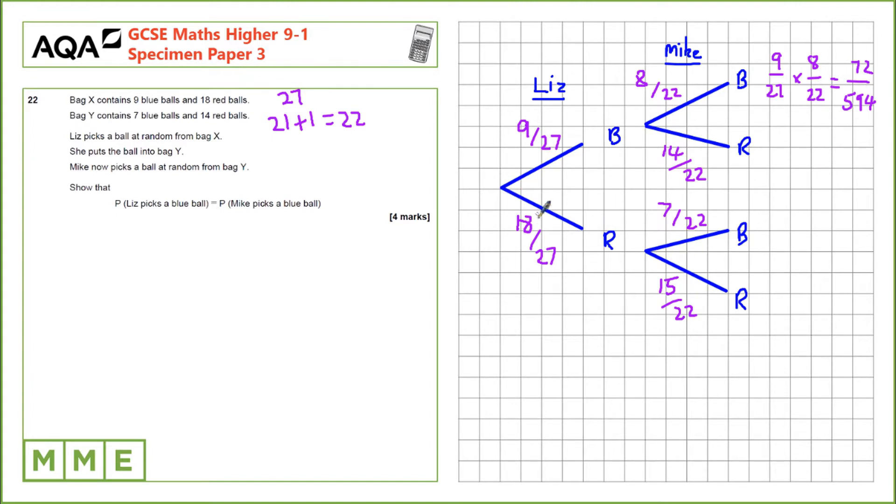And then there's the case where Liz picked a red ball and then Mike picks a blue ball anyway. So that's Liz's probability of picking a red ball, 18 over 27, multiplied by 7 over 22, which equals 126 over 594.